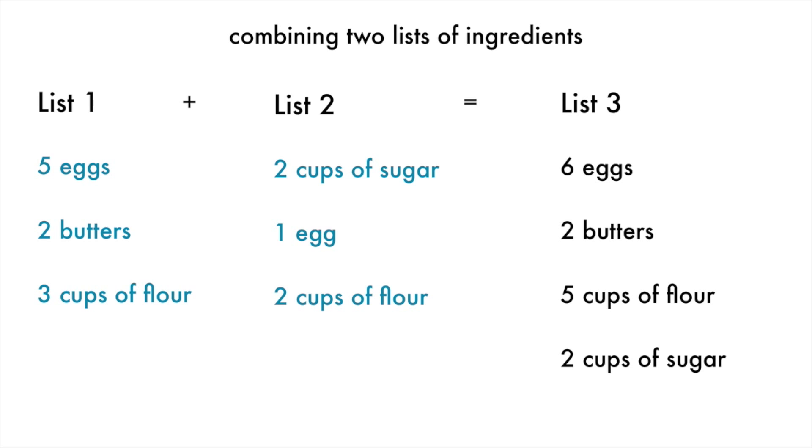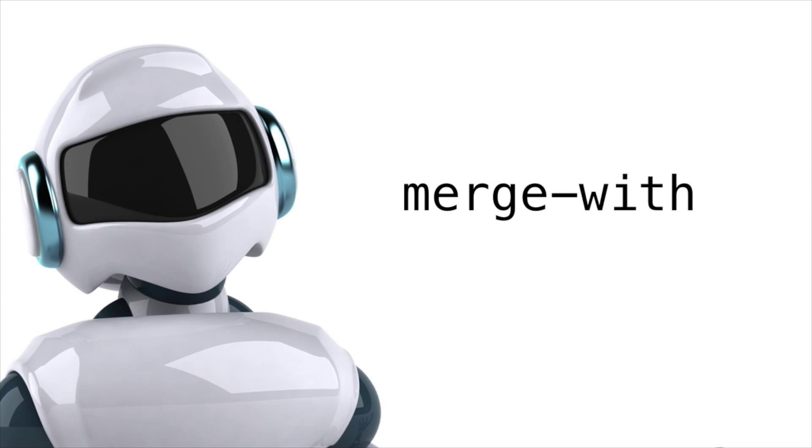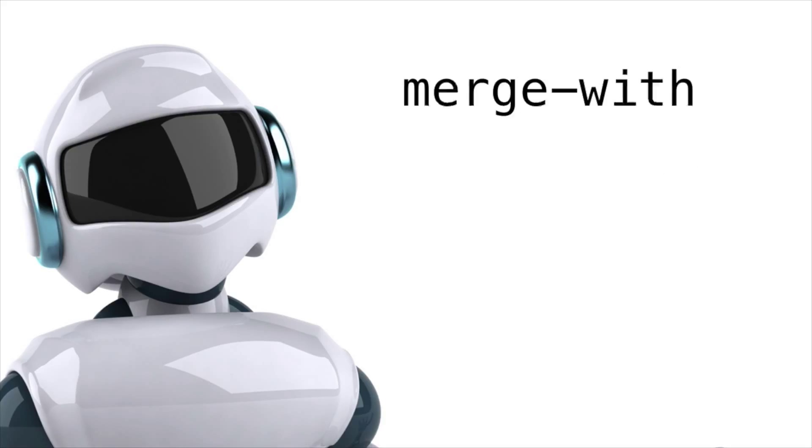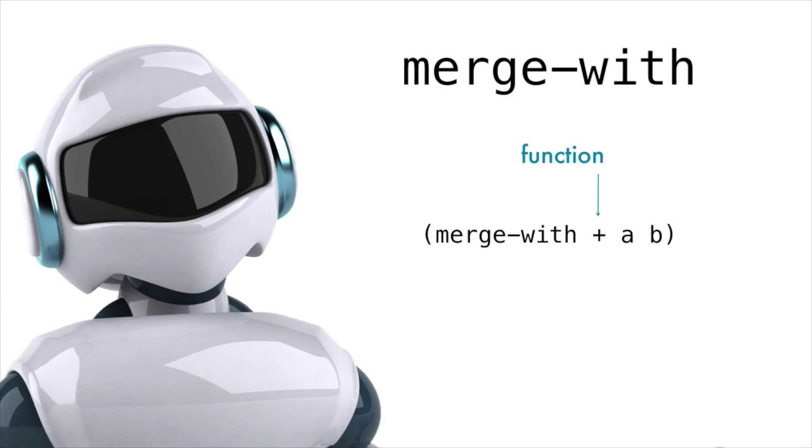MergeWith is a built-in function that does just that, except it's even cooler. You can pass any function to mergeWith, not just plus. For instance, you could pass times, divide, or anything. It applies it to the two maps, just like we saw in the combining two lists example.